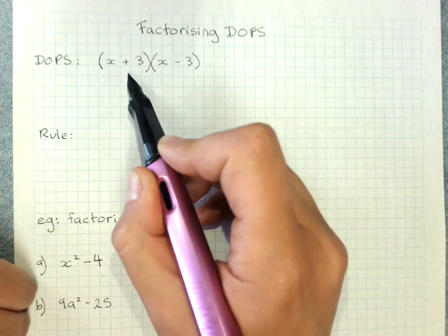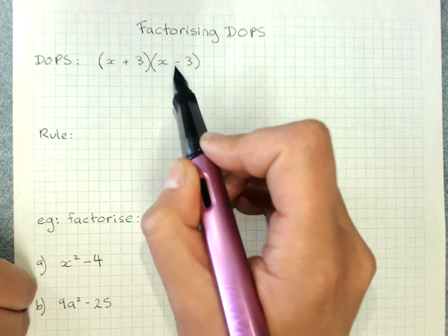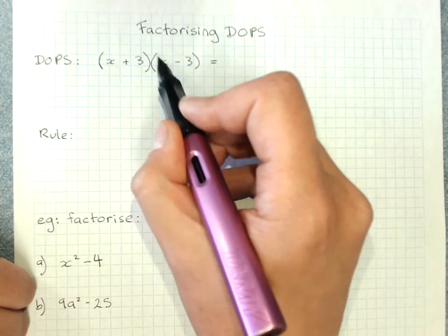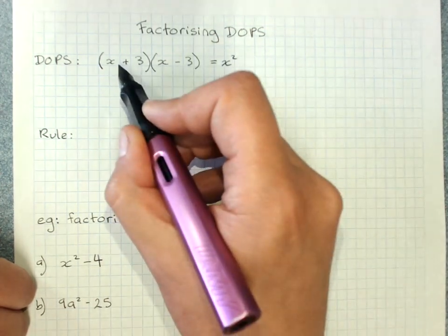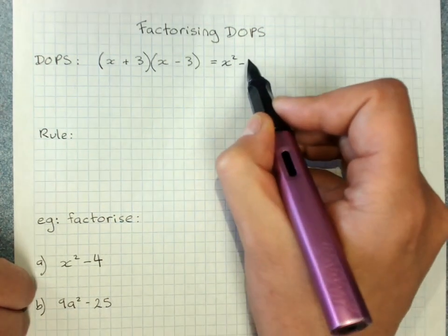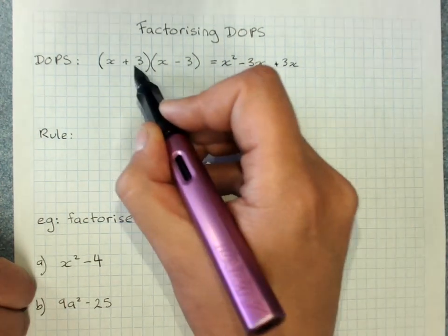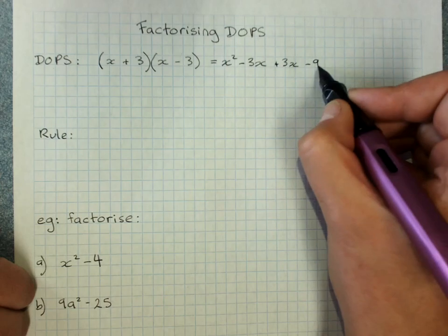So the same terms in the brackets, but one is plus, one is minus. When we expand that, x times x is x squared, x times negative 3, negative 3x, 3 times x plus 3x, 3 times negative 3, negative 9.